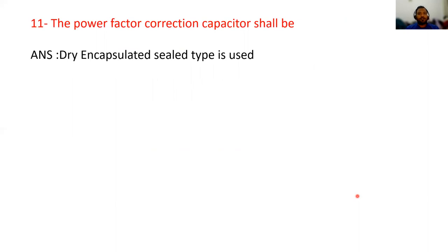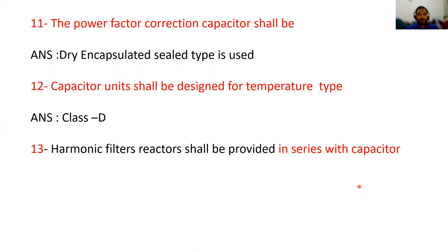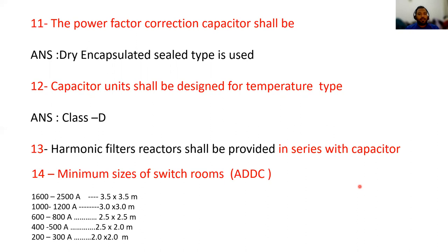The power factor correction capacitor shall be dry encapsulated steel type; capacitor units shall be designed for temperature class D. A harmonic filter reactor shall be provided in series with capacitors. Minimum size of switch room as per ADDC: for breakers 1600 to 2500 A — 3.5 m × 3.5 m; 1000 to 1200 A — 3 m × 3 m; 600 to 800 A — 2.5 m × 2.5 m; 400 to 500 A — 2.5 m × 2 m; 200 to 300 A — 2 m × 2 m.